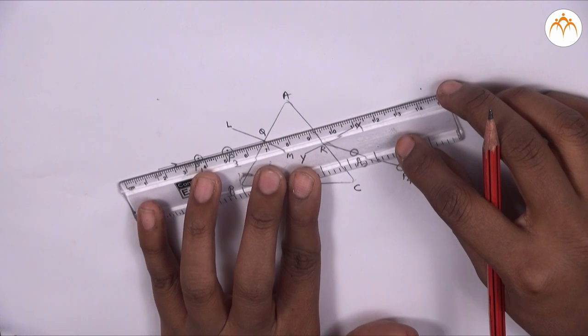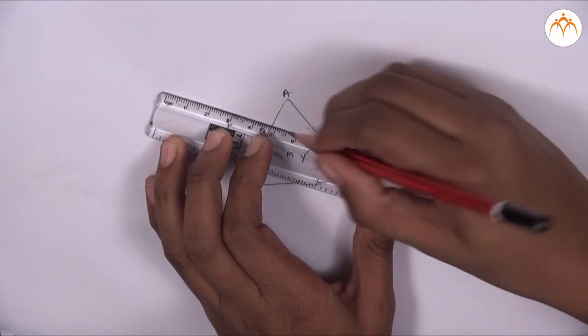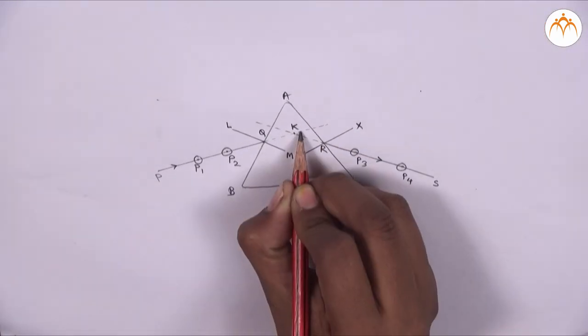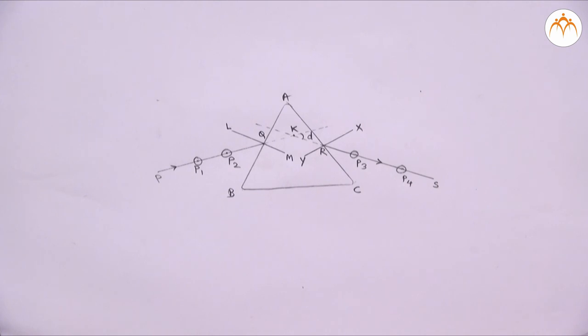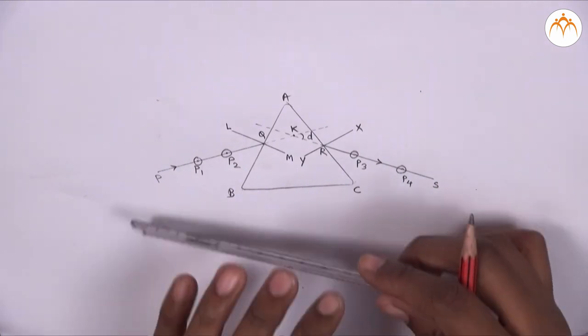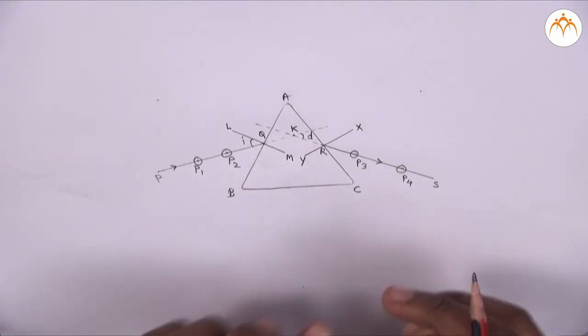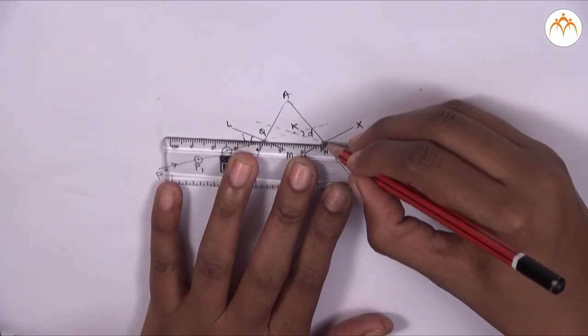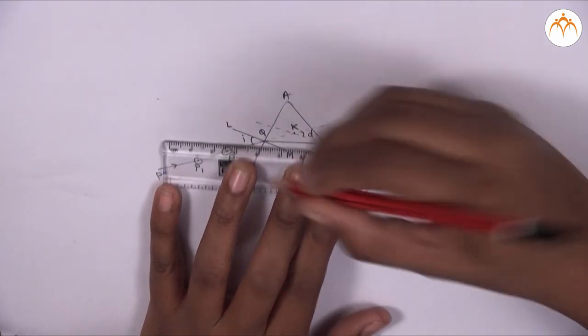Extend ray PQ and ray SR on opposite sides to intersect each other at point K. Measure the angle between these two rays PQ and SR, which is the angle of deviation D. Angle PQR is the angle of incidence. Angle MQR is the angle of refraction, and angle SRY is the angle of emergence.